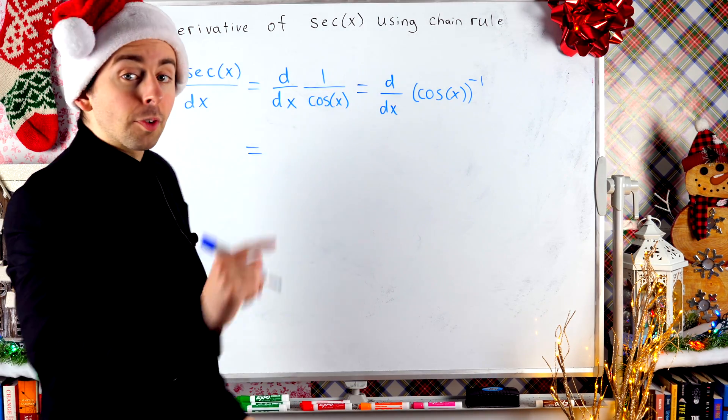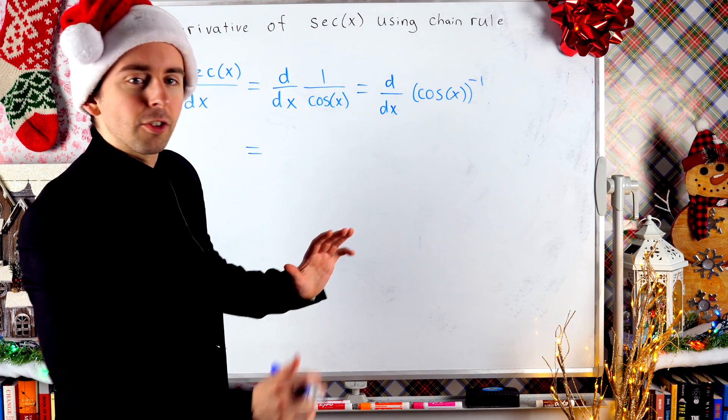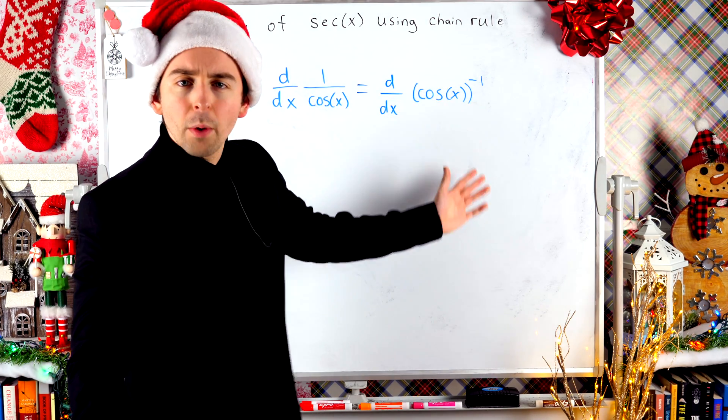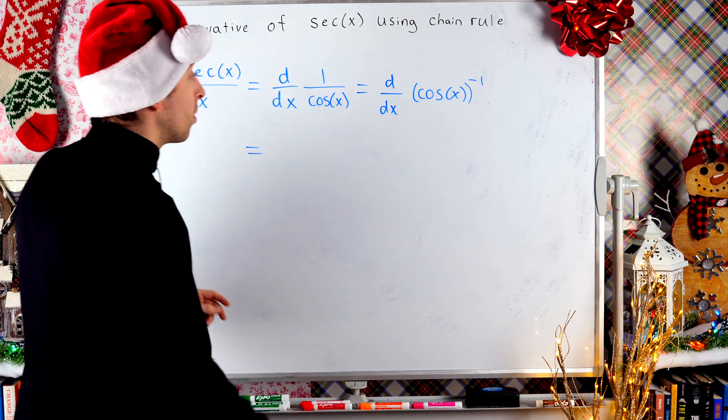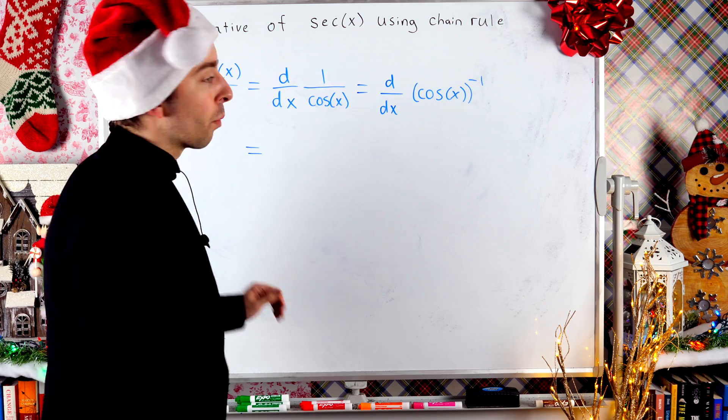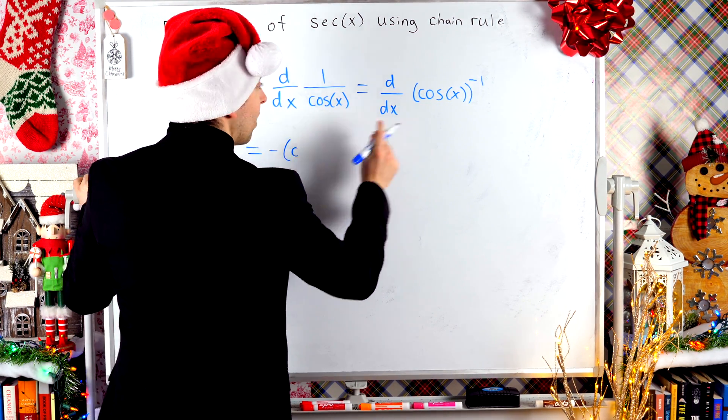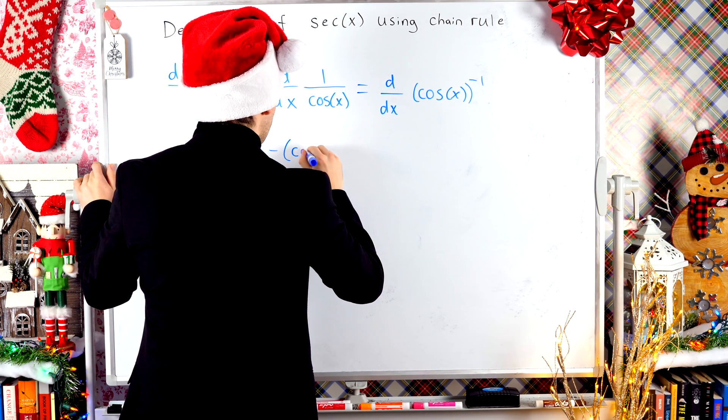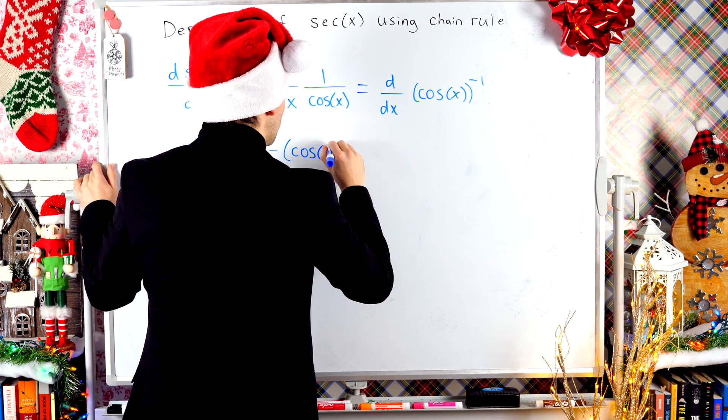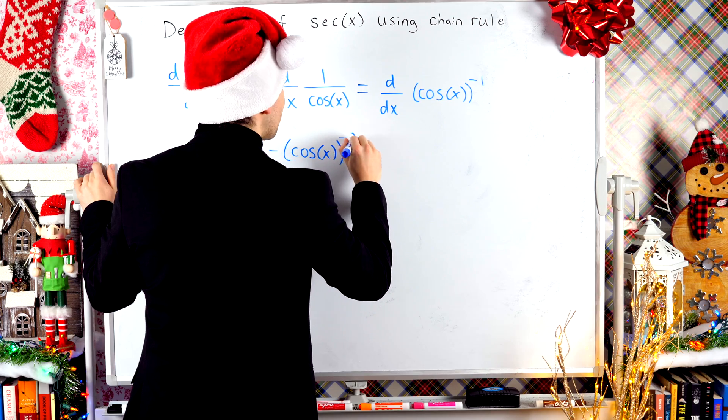All right. First, we'll take the derivative of the outside function, the thing to a power of negative one. In order to do that, we just use the power rule. So bringing the negative one down as a factor, and then we need to reduce this power by one. So when we take the derivative of the outside function, we get negative cosine of x, because we don't change the inside function when we're doing the chain rule.